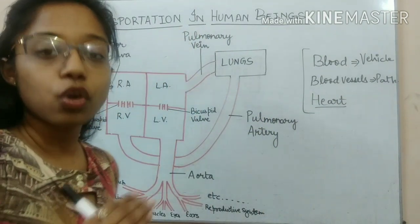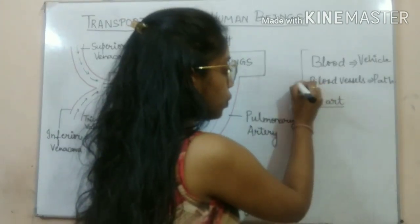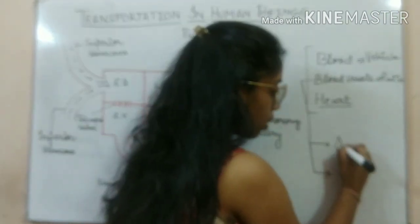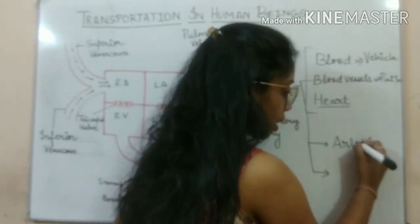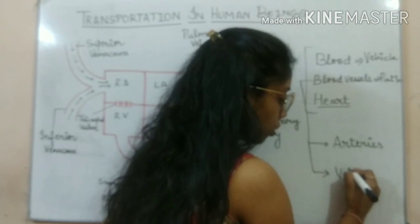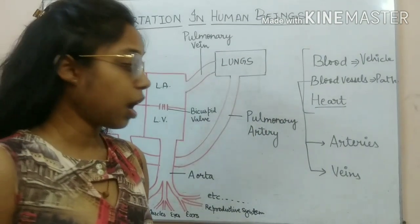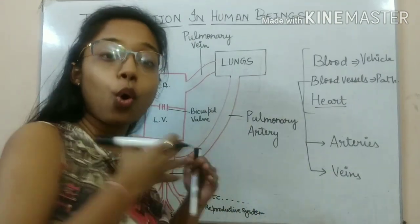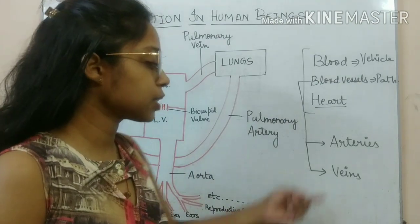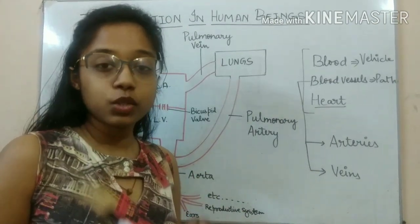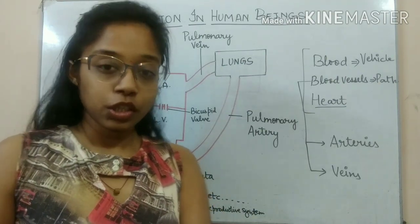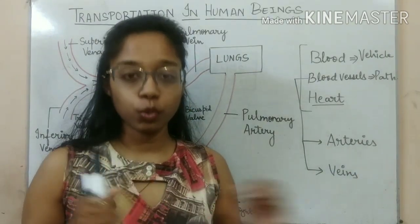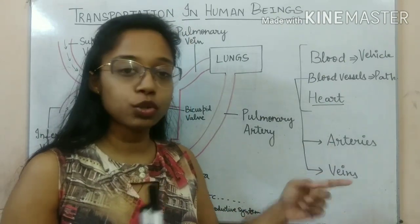The next important component is the heart. So these three — blood, blood vessels, and heart — are the main components of the transport system. Now, there are two types of blood vessels: arteries and veins. Arteries carry blood from the heart to all parts of the body, whereas veins carry blood from all parts of the body back to the heart. Both are one-way roads, but traffic runs in opposite directions.